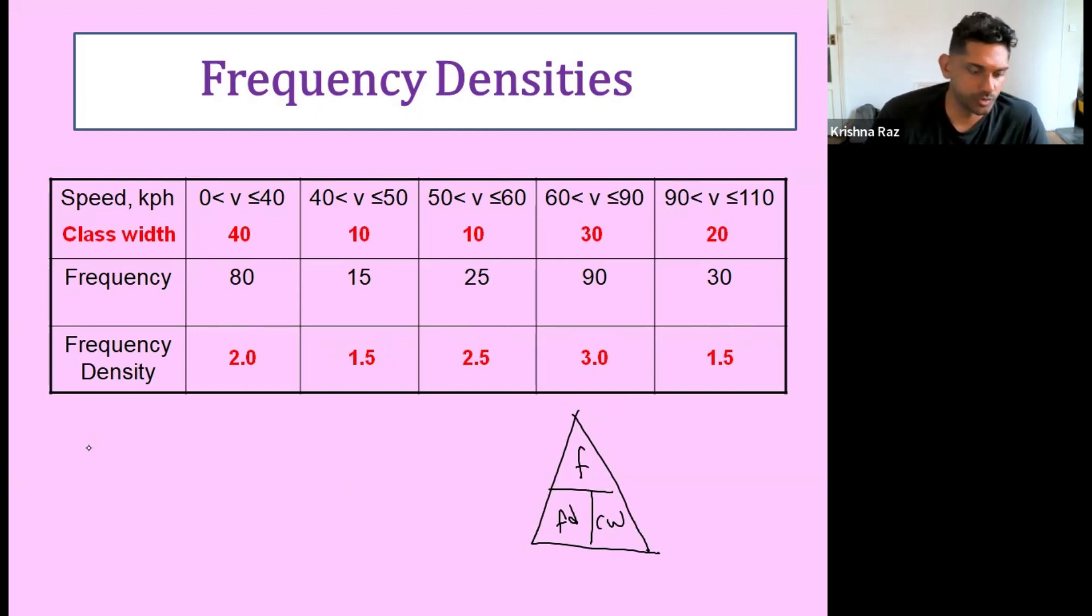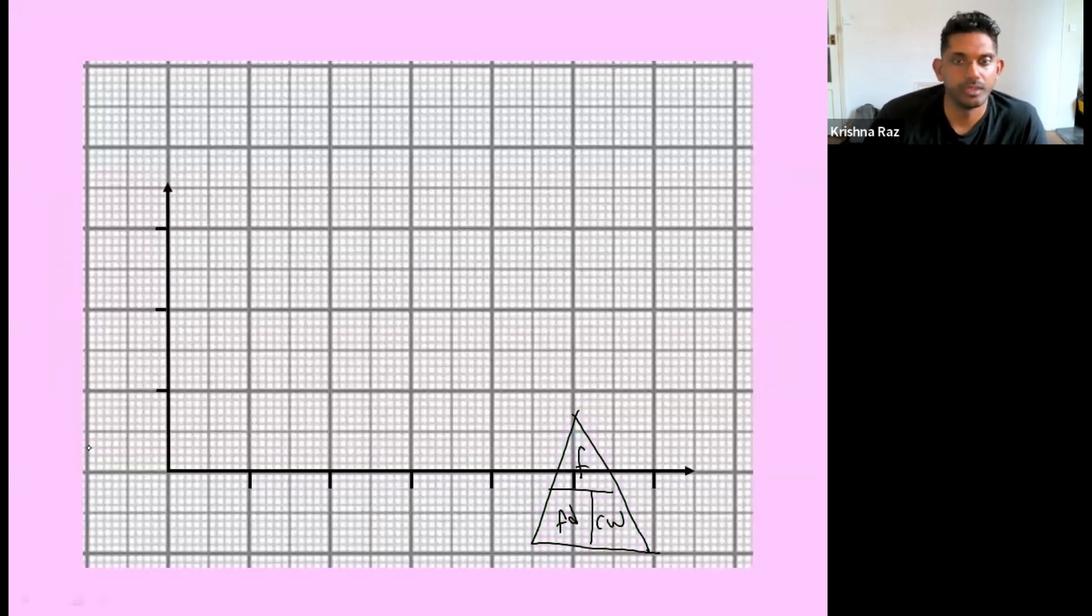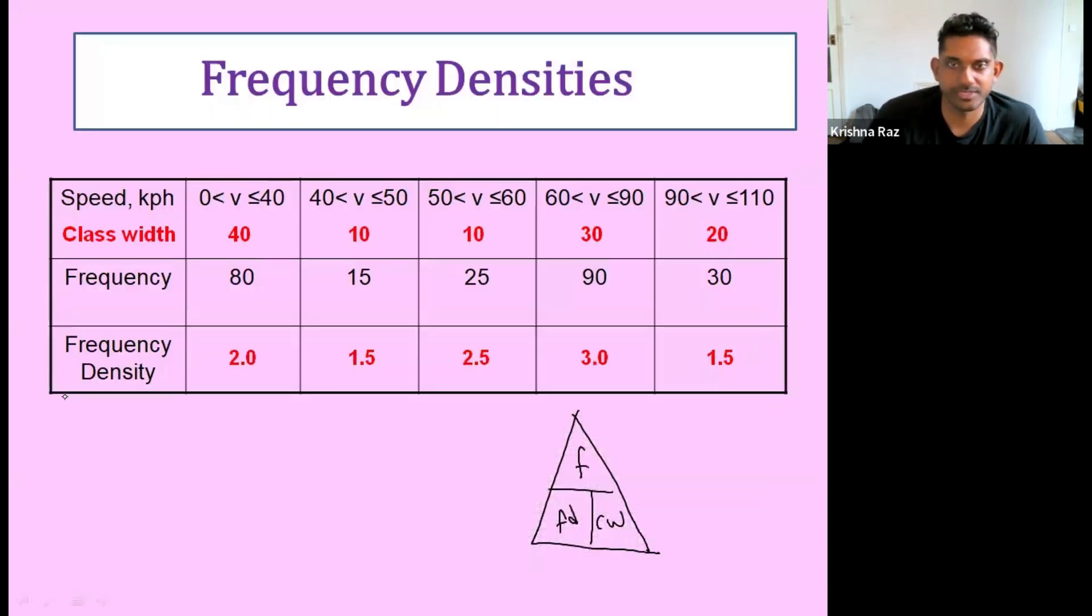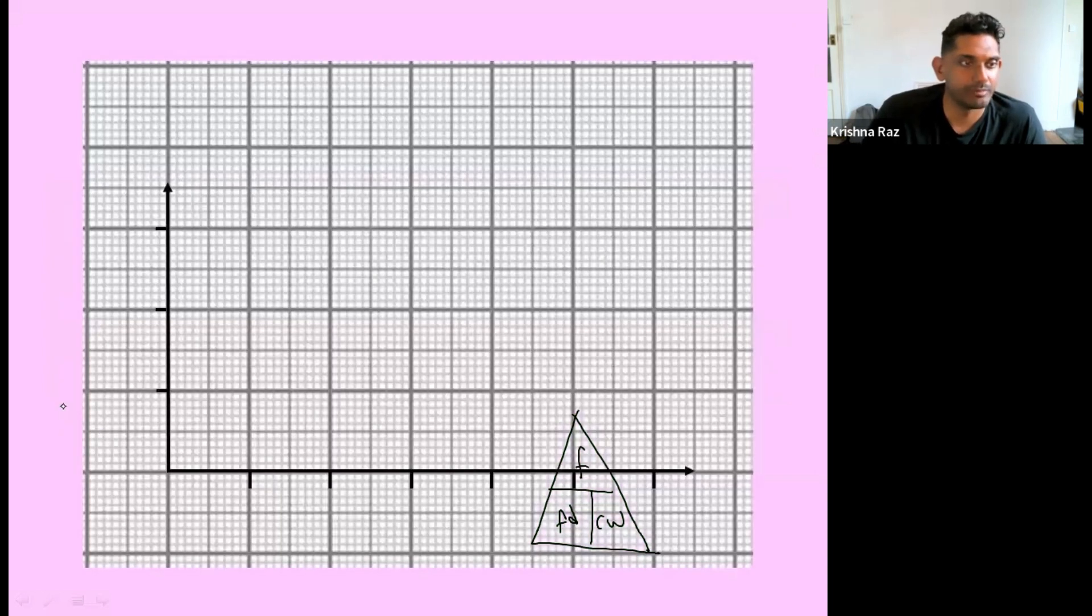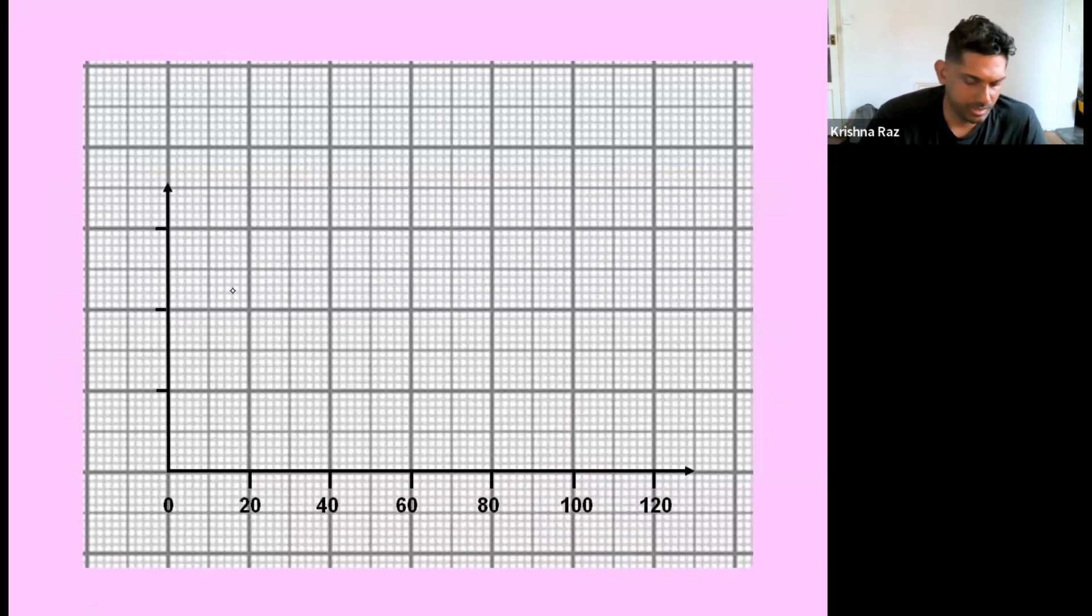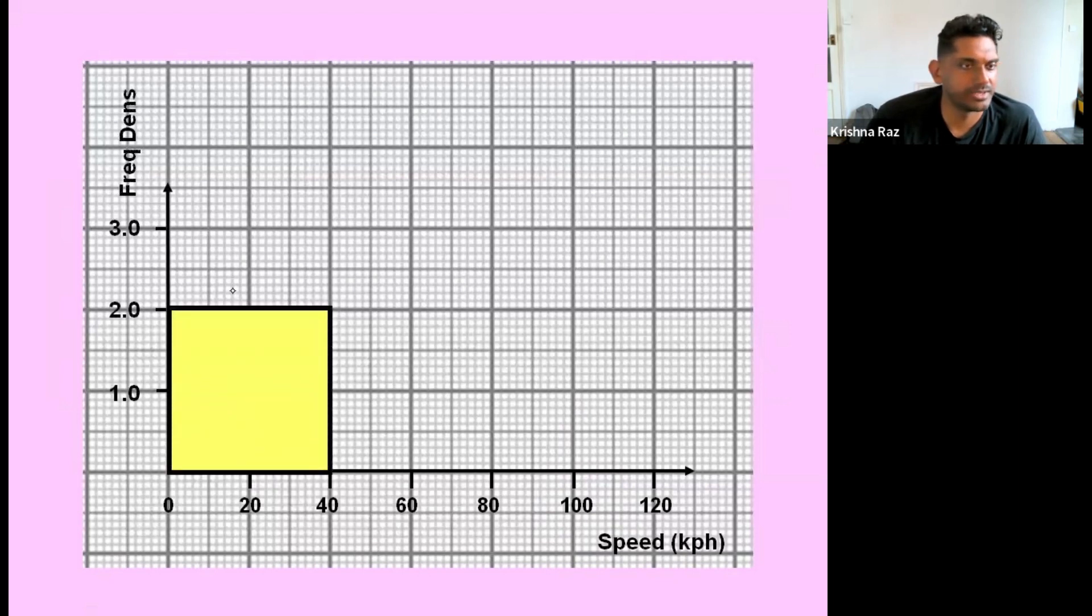Now all that is left to do is just to draw the bars. So we will need the variable on the x-axis, which here was speed. And on the y-axis, we want frequency density. So the biggest frequency density we had was 3, and we had the speed going from 0 to 110. So when we label that, we will label it accordingly. And on the y-axis, we've got frequency density.